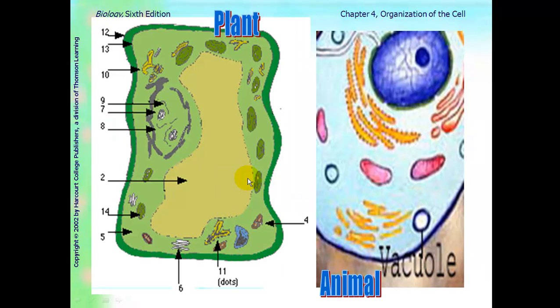Looking back at the picture: here is the plant cell, and as you can see the vacuole is very large. In an animal cell, it is very small.